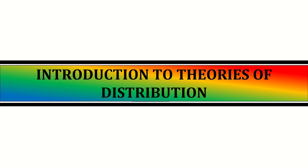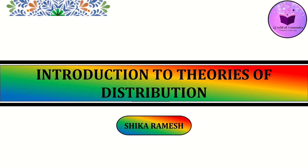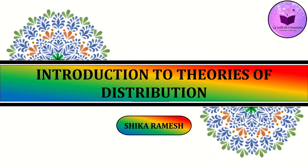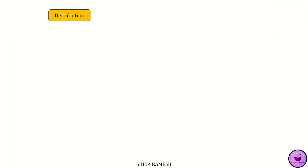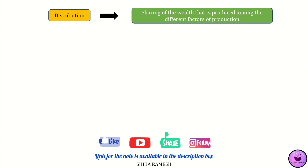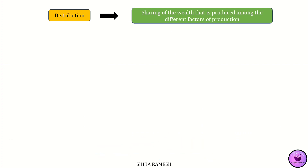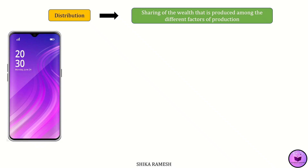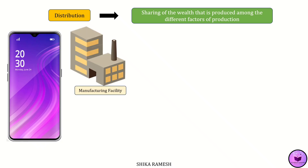In today's video we shall look into the theories of distribution. Distribution in economics refers to the sharing of output, income, or wealth among different factors of production. Consider the production of smartphones — it requires land wherein resources will be extracted and the manufacturing facility will be established, for which the company may pay rent.